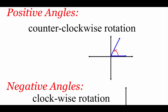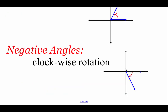Depending on which way we go — either counterclockwise or clockwise — it's going to affect what kind of angles we have. If we go in a counterclockwise direction, we're going to end up with positive angles. However, if we move in a clockwise direction, that's going to give us some negative angles.